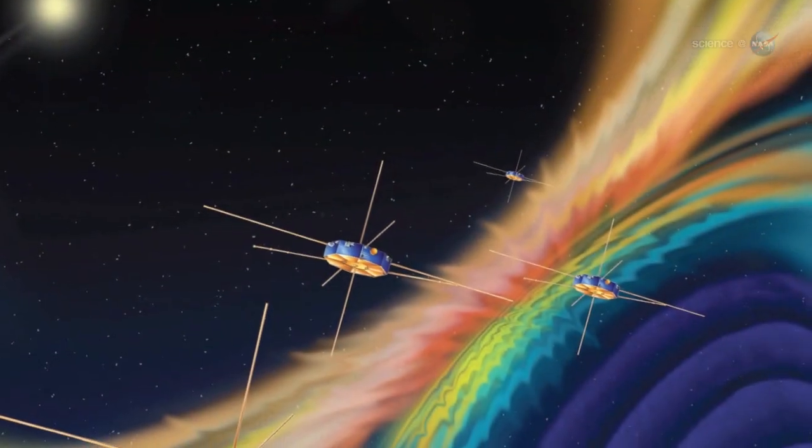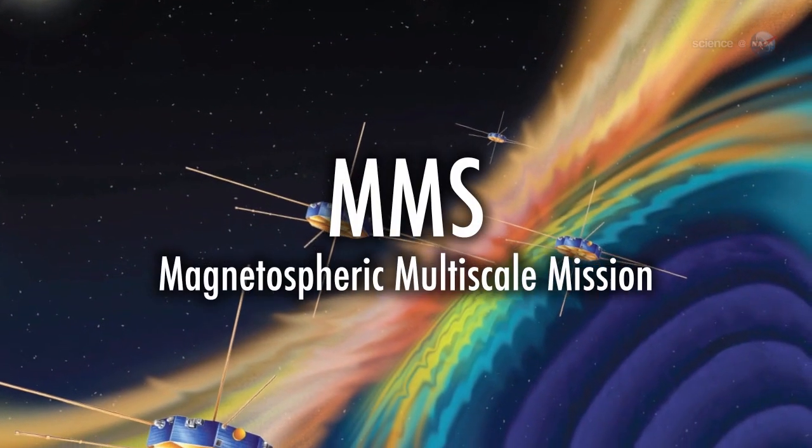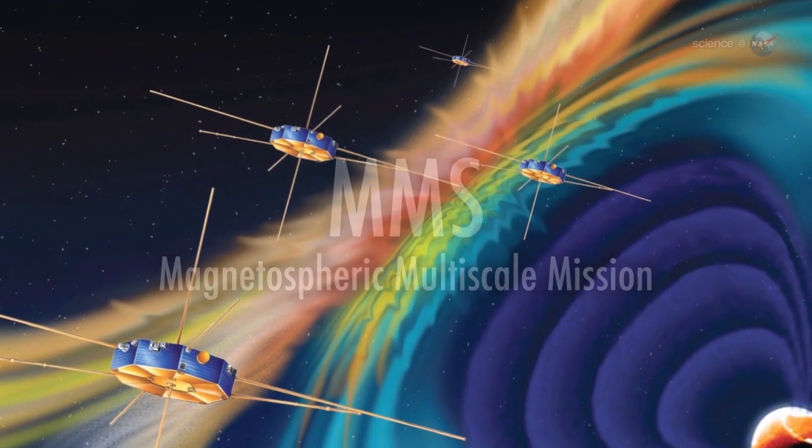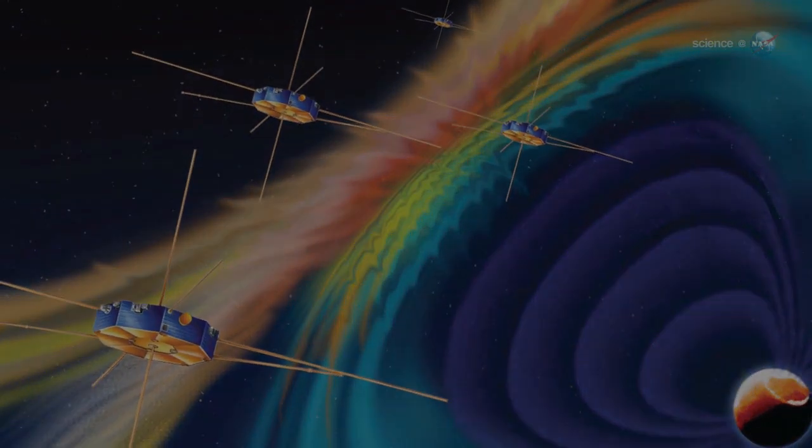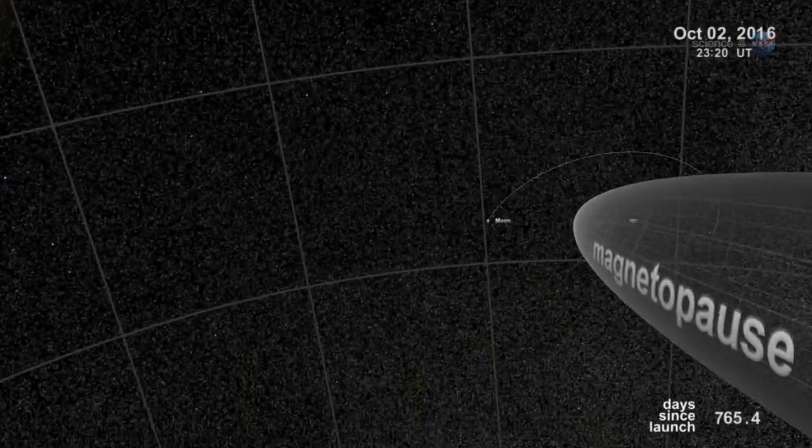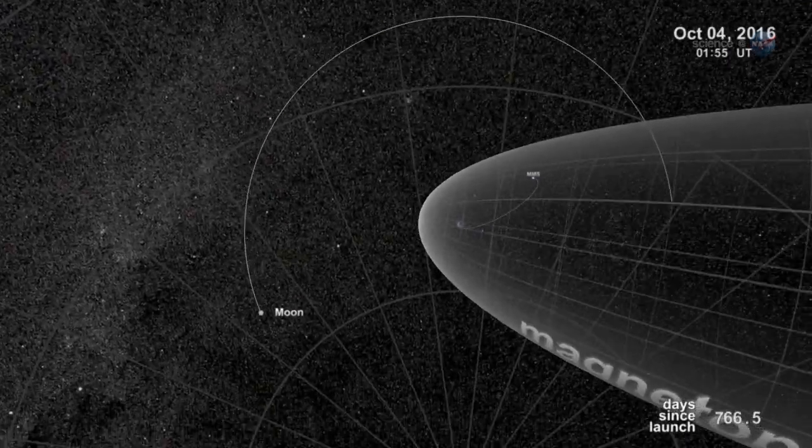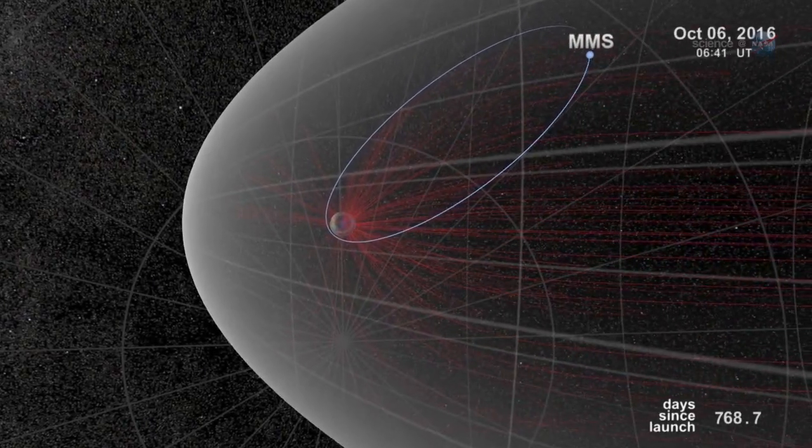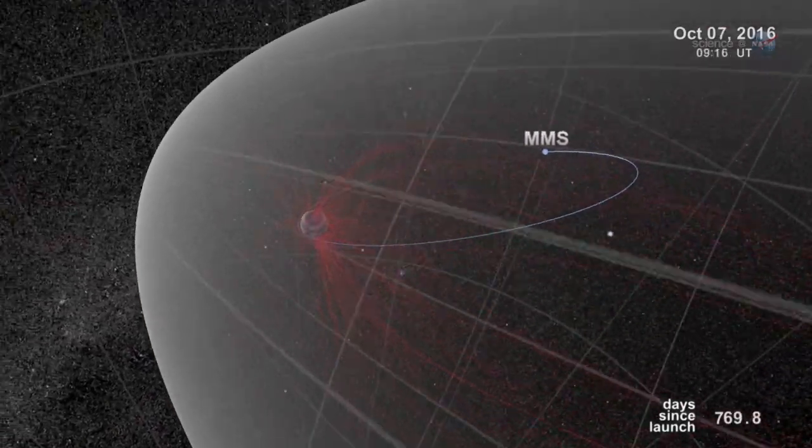NASA is planning a mission called MMS, short for Magnetospheric Multiscale Mission, due to launch in 2014 to study the phenomenon. Bristling with energetic particle detectors and magnetic sensors, the four spacecraft of MMS will spread out in Earth's magnetosphere and surround the portals to observe how they work.